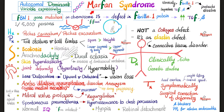Tall, thin Marfan patients are the typical candidates for ruptured apical blebs of the lungs, leading to spontaneous pneumothorax with hyperresonance on chest percussion. However, tracheal shift to the opposite side is unlikely. Unlike homocystinuria patients who have intellectual disability, Marfan syndrome patients tend to have normal IQ and normal intellect.